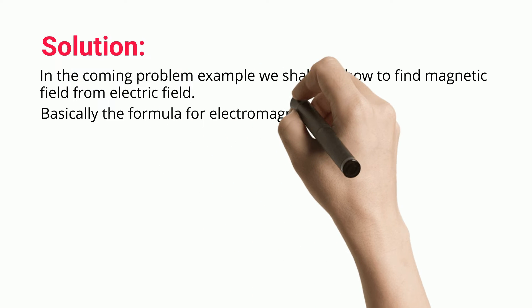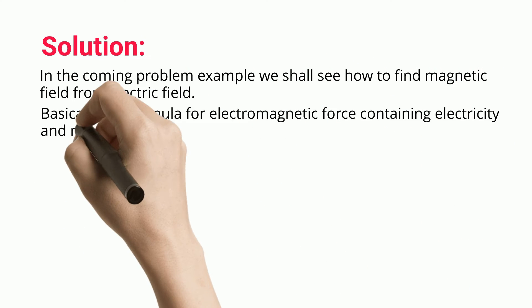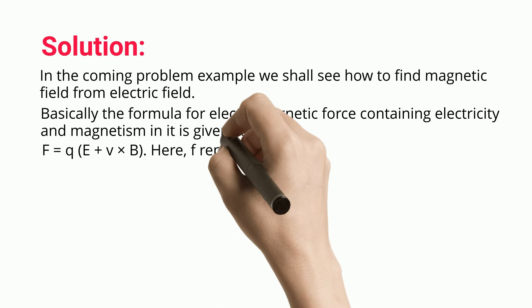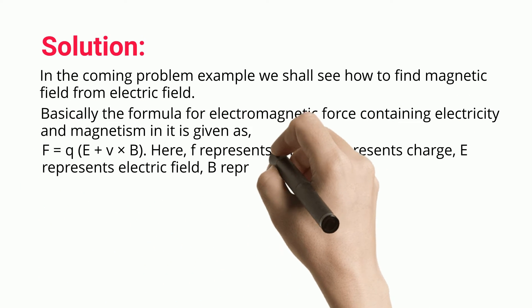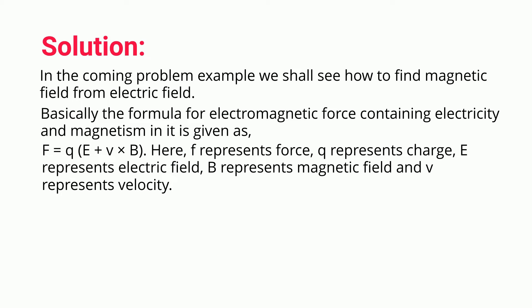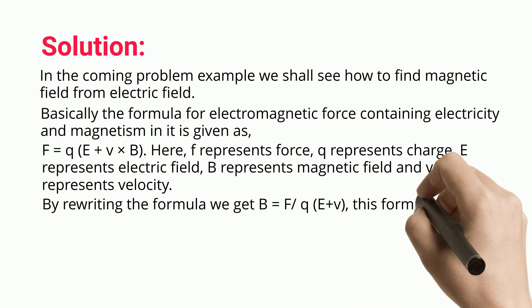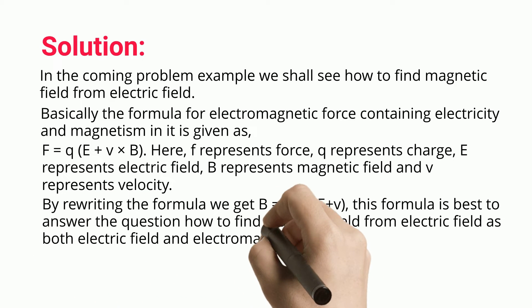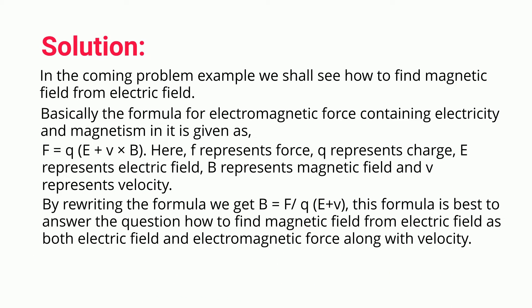The formula for electromagnetic force, containing both electricity and magnetism, is given as: F = qE + vB, where F represents force, q represents charge, E represents electric field, B represents magnetic field, and v represents velocity. By rewriting the formula, we get B = (F/q - E) / v. This formula is best used to answer how to find magnetic field from electric field, as it involves both electric field and electromagnetic force along with velocity.